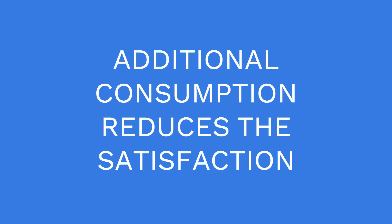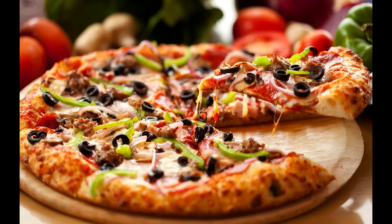Suppose I am hungry and I purchase five slices of pizza. When I consume the first slice, it gives me happiness or satisfies my hunger. While consuming the second slice, the level of happiness or satisfaction would be less. Similarly, it reduces further with the consumption of the third, fourth, and fifth slices. This is basically the law of diminishing marginal utility.